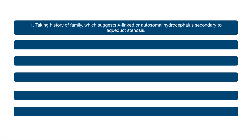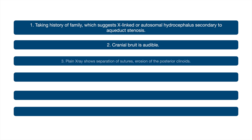For investigations: taking a family history, which may suggest X-linked or autosomal hydrocephalus secondary to aqueduct stenosis. Cranial bruit may be audible. Plain X-ray shows separation of sutures and erosion of the posterior clinoids. Imaging includes ultrasound, CT scan, and MRI.